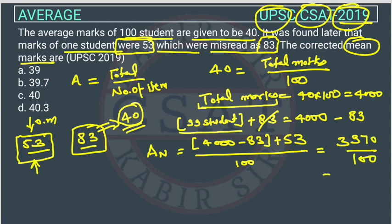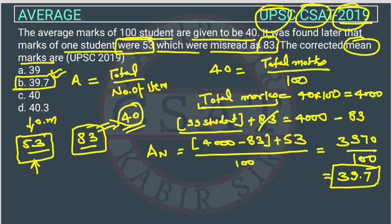So the corrected average is 39.7. The answer, option B, is correct.